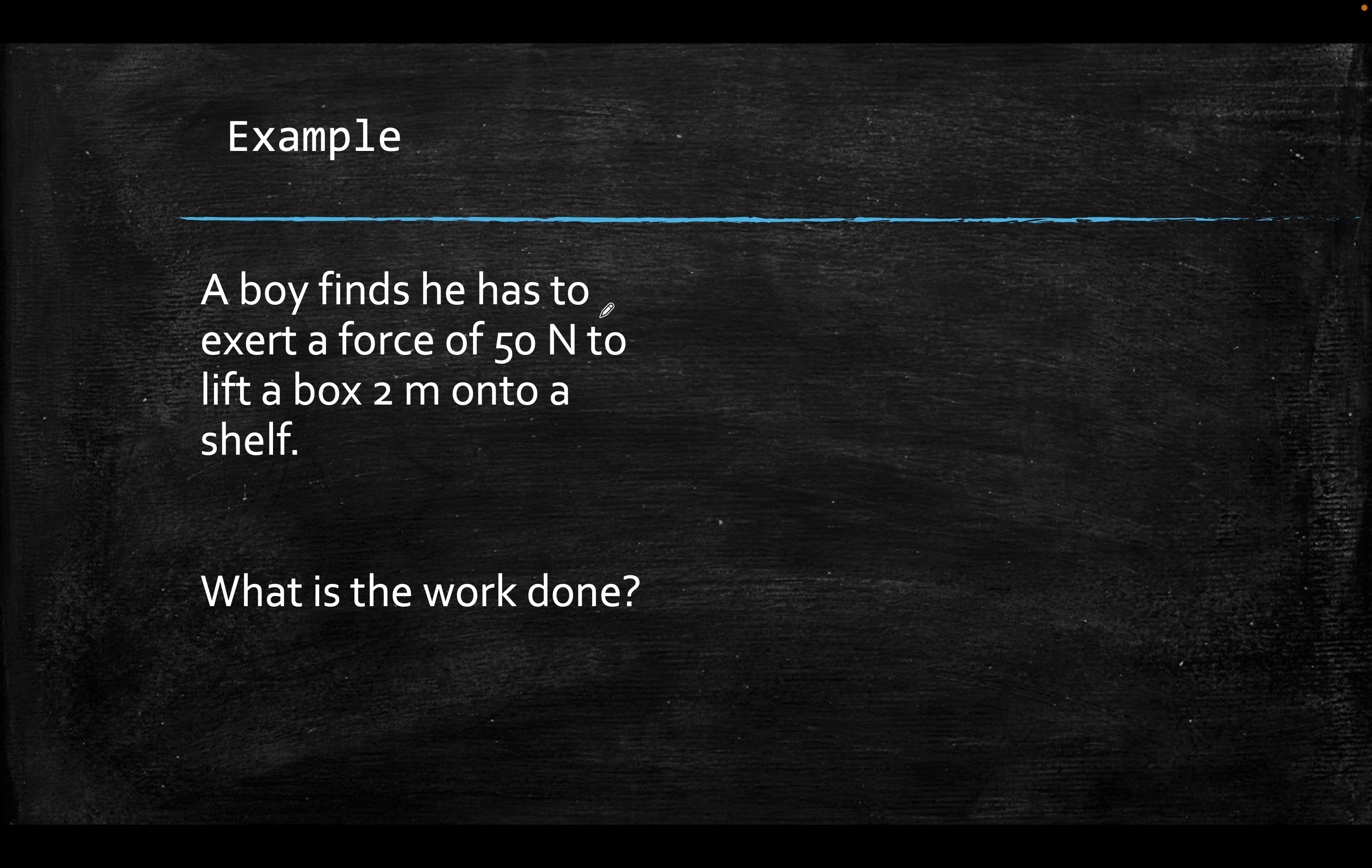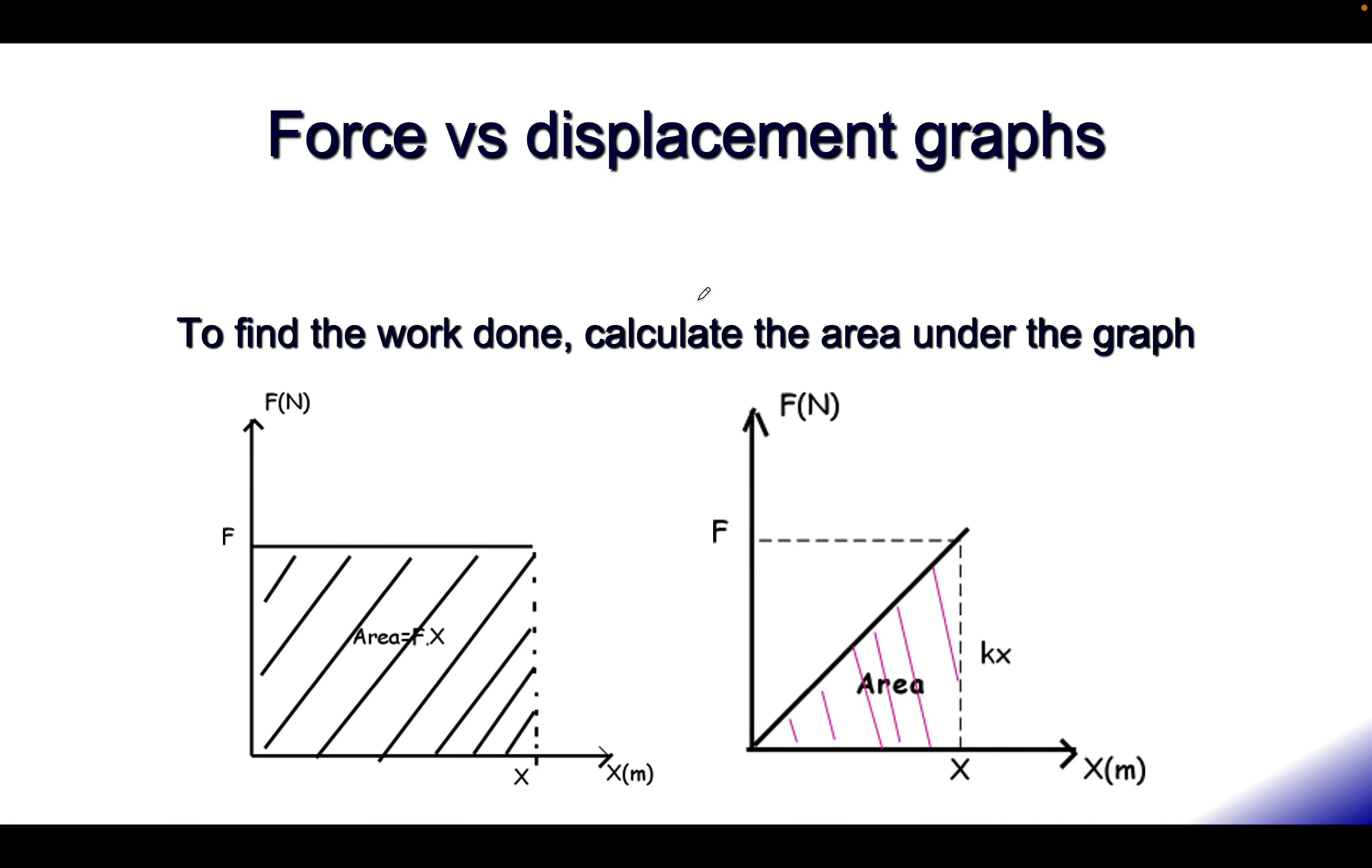A boy finds he has to use a force of 50 newtons to lift a box 2 metres onto a shelf. What is the work done? Well, we can use the formula EW equals FD. There is no angle, so we'll just do 50 multiplied by 2, and you'll get 100 joules. So you'll get 100 joules of energy.